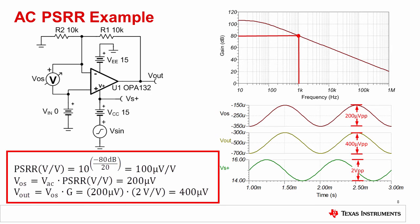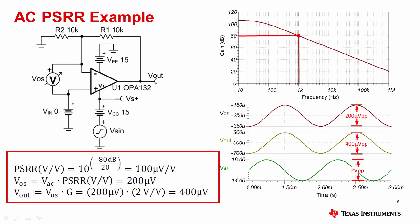Here, we are showing a transient response to an AC supply voltage at 1 kilohertz. The AC PSRR curve shows that PSRR is 80 dB at 1 kilohertz, which translates to 100 microvolts per volt. Multiplying the 2 volt peak-to-peak input signal by the 100 microvolt per volt PSRR specification yields a 200 microvolt peak-to-peak input offset voltage. The output can be calculated by multiplying the 200 microvolt peak-to-peak offset voltage by the gain of 2 volts per volt, for a total output voltage of 400 microvolts peak-to-peak. It is important to remember that all Bode plots relate to sinusoidal waveforms. Later, we will look at applying a non-sinusoidal signal to the supply.